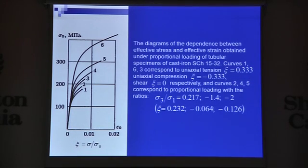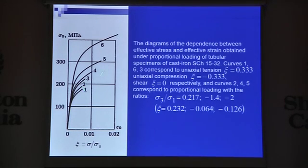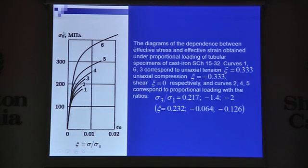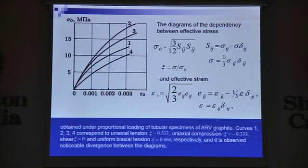Here you can see the stress-strain curves obtained for cast iron. Curve 1 corresponds to uniaxial tension, curve 2 to uniaxial compression, and curve 3 to pure shear. These curves are obtained under different ratios of principal stresses. To characterize each of these curves we can use a parameter which is the ratio of the hydrostatic component of stress to the effective stress, named stress triaxiality.